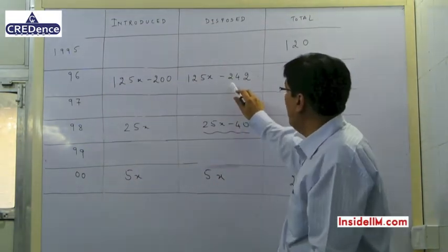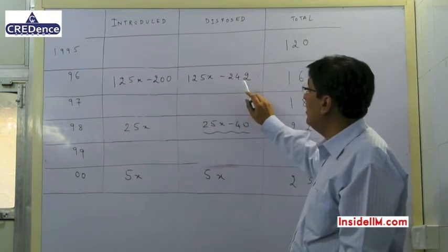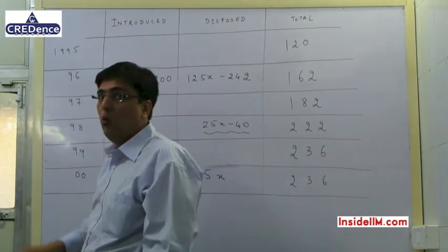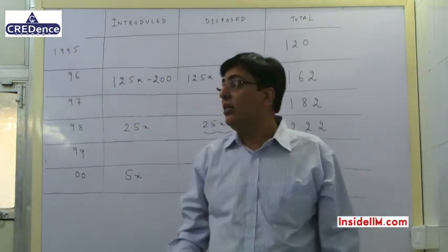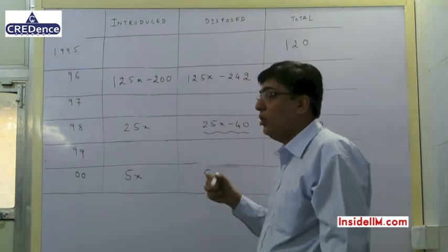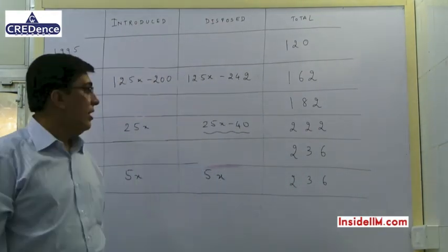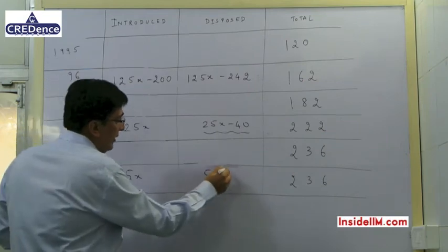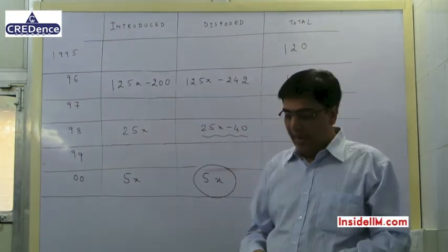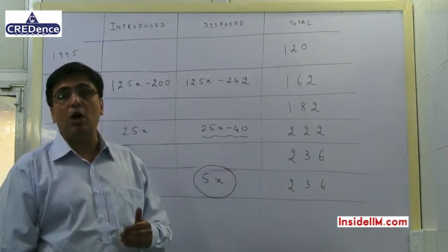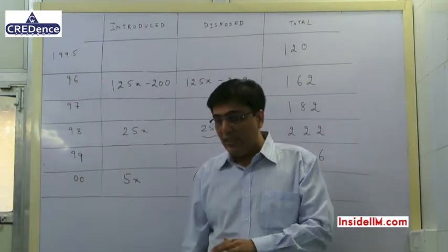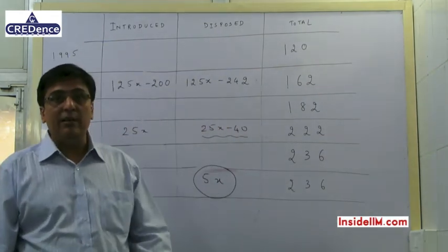We have now proved x can only be 2. If x = 2, then the number of Mixture Grinders disposed of in 2000 is 5 × 2 = 10. Hence the answer to question 4 is 10. This is significant because in many places the answer given for this question is 'cannot be determined,' but we have shown that it is not indeterminate — the answer is the fourth option.